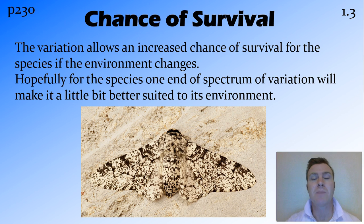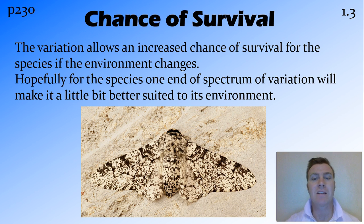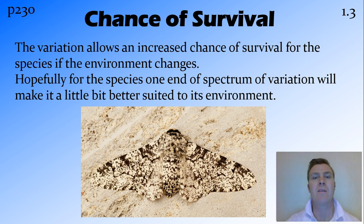The more variation that you have within a species, the more it increases the chances of survival if that environment were to change. It may be suited to that particular environment, but then there's a selecting factor that occurs. If one end of that spectrum is more suited to the environment, the ones that aren't as well suited are going to die off, and the population will have those genes that are a little bit more suited to the environment.